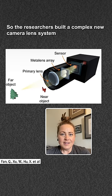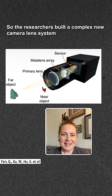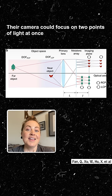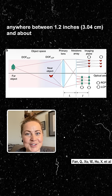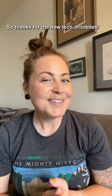So researchers built a complex new camera lens system inspired by the optical structure of the trilobite's eyes. Their camera could focus on two points of light at once, anywhere between 1.2 inches and about a mile away, an important advance in the field of optics. So thanks for the new tech, trilobites!